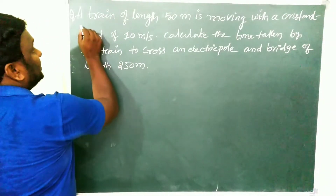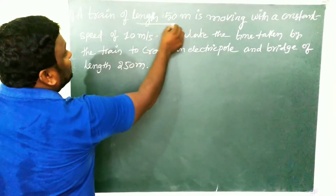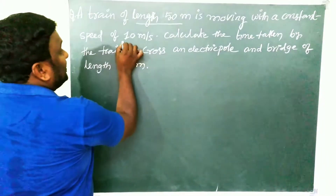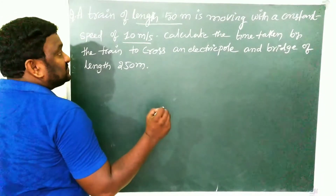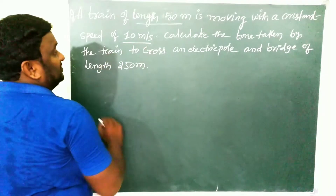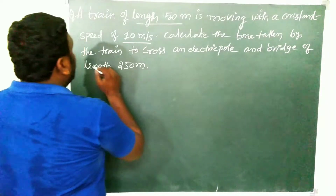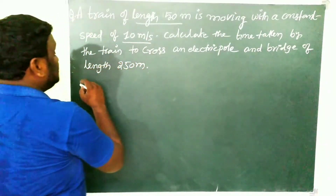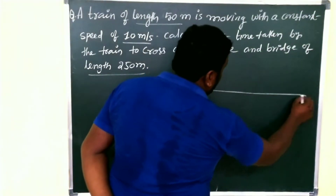A train of length 50 meters is moving with a constant speed of 10 meters per second. We have to calculate the time taken by the train to cross an electric pole and a bridge of length 250 meters. So this is a straightforward problem.